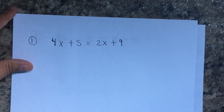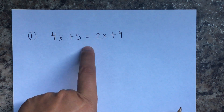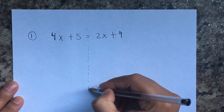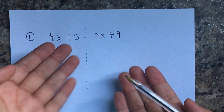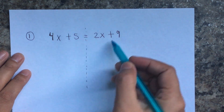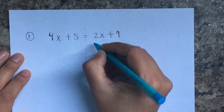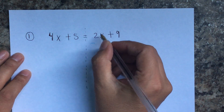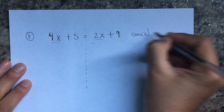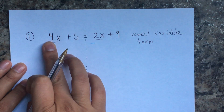Okay, so we have number one. The first thing I want you to do is draw a line at the equal sign if you get confused. This means it's like a balance — whatever is on this side is the same as whatever you have on that side. We have x on both sides, and we cannot have that, so we need to get the variable term on one side only.